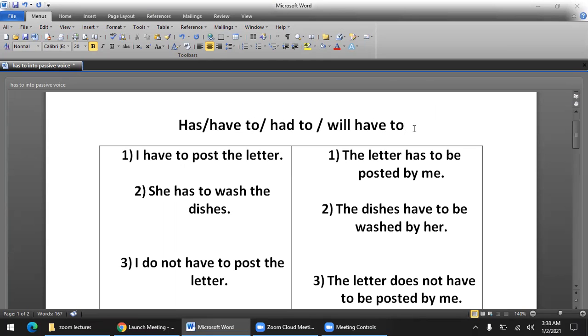Let's take an example: posting a letter. If it's compulsory to post it in the present, what should we use? We use have to. The condition is that when the subject is I, you, they, or a plural noun, we use have to. When the subject is he, she, it, or a singular noun, we use has to.